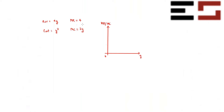The marginal cost is 2y. Let me plot these two. Marginal revenue is a horizontal line. If I want to figure out total revenue at some quantity y-naught, total revenue is the integral of marginal revenue — so it is the area under the marginal revenue curve from zero to y-naught.